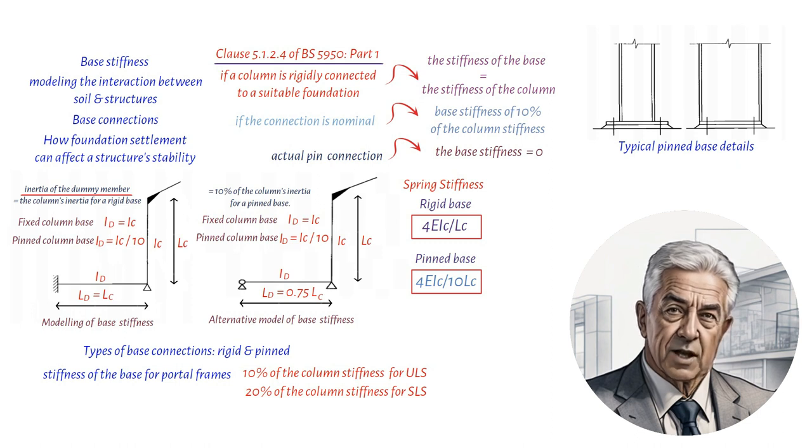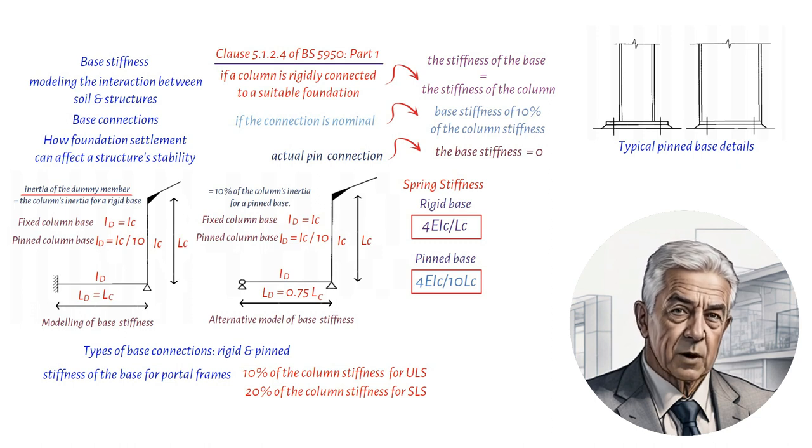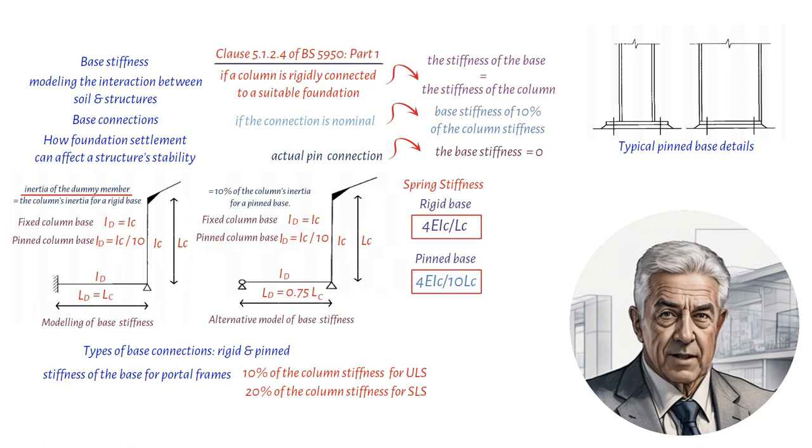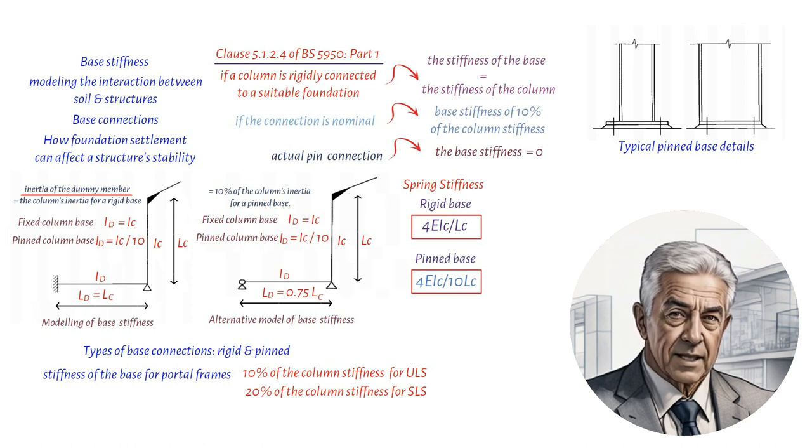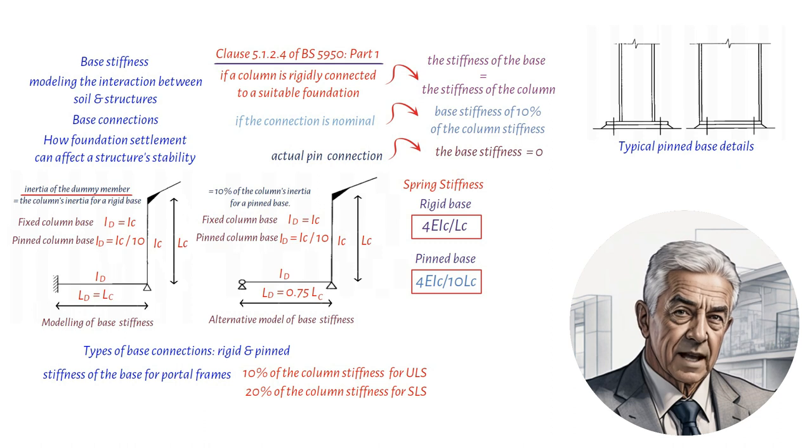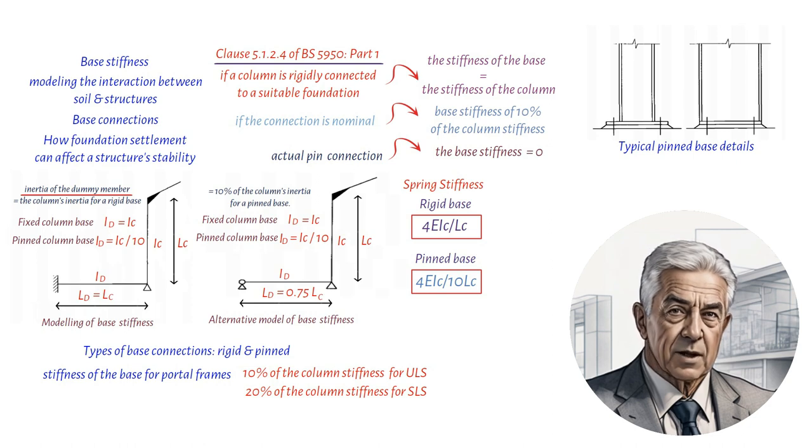Let's move on from our discussion about steel portal frames and their base connections and talk about other options for base support and how foundation settlement affects the structure. We talked about rotational base fixity. However, did you know that there are other base support options like vertical and horizontal support options of rigid, free, and a spring stiffness? If you're interested in learning more about these options, we recommend checking out Reference 16 for more detailed advice.